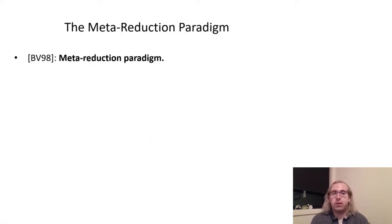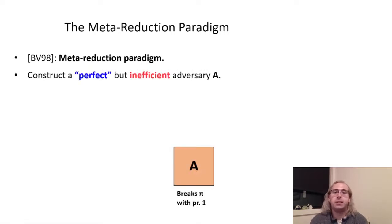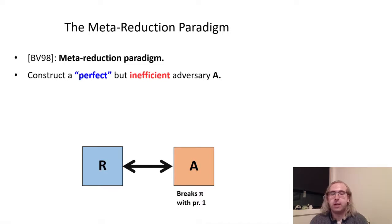We prove our lower bound through the meta-reduction paradigm, which was pioneered by Bonet and Venkatasan in 1998. Let's say we have some primitive pi, for which we want to rule out reductions to standard assumptions. Next, imagine a perfect adversary A, which breaks pi with probability 1, but does so inefficiently, say in superpolynomial time. When we consider a black-box reduction R that uses A to break an underlying assumption C, R will successfully break C with some significant non-negligible probability P.